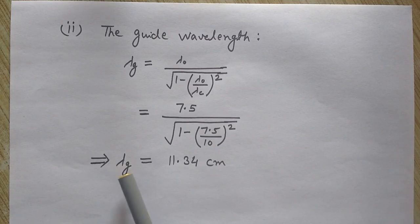And then this lambda C is 10 centimeters. So just calculate it and you will get the guide wavelength equals to 11.34 centimeters. So this was the solution of the problem. Hope you liked it.